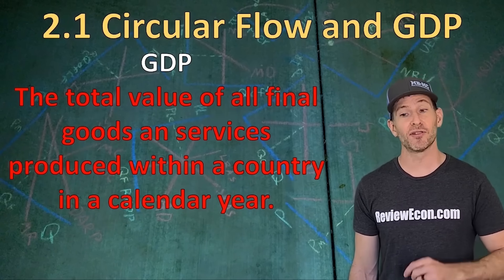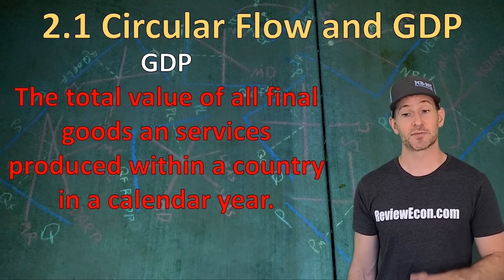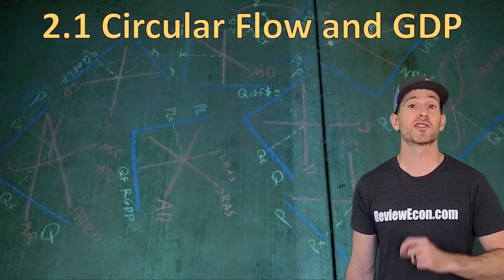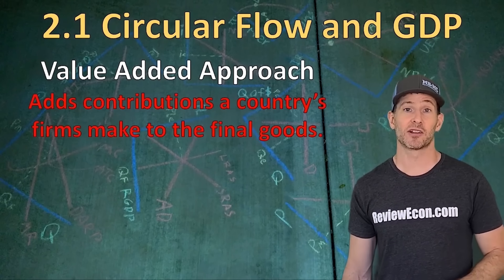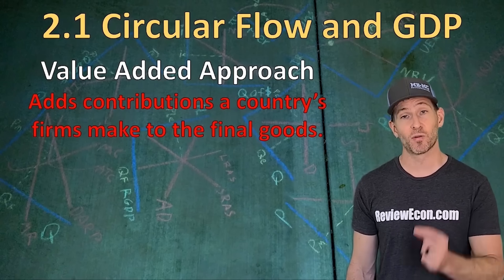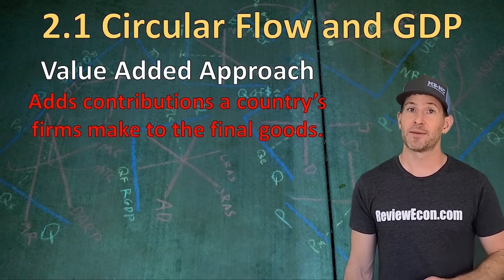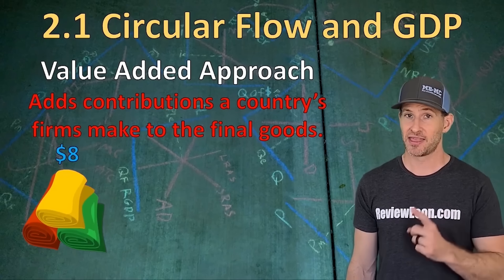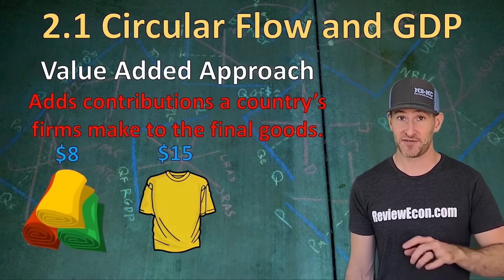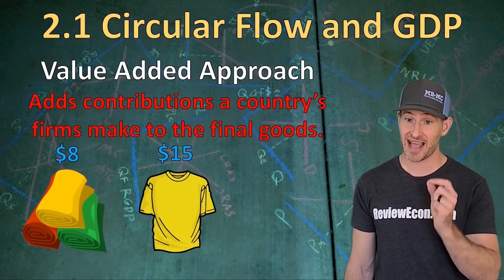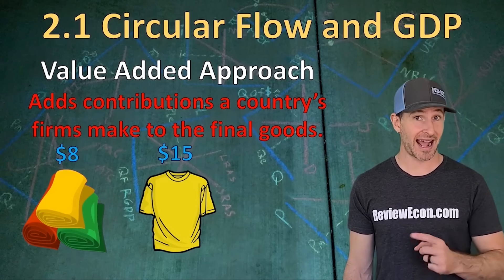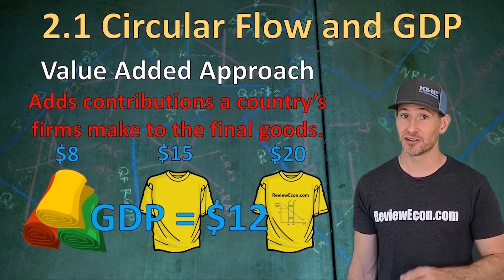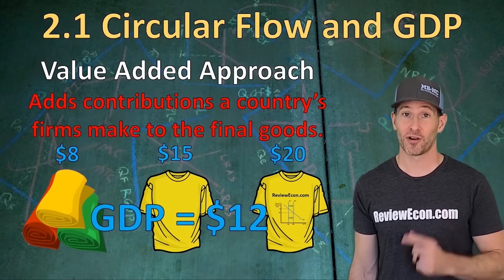Here's our definition of GDP: it is the total value of all final goods and services produced within a country in a calendar year. There are three methods for calculating GDP. The first is called the value added approach, where we look at the contributions of a country's firms toward making a final good. For example, a US firm imports $8 of fabric, turns it into a $15 shirt — that's $7 of added value. Then a t-shirt screener adds graphics and sells it for $20, giving us a total of $12 of added value for US GDP.